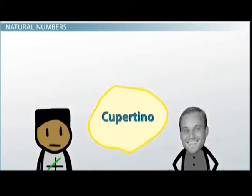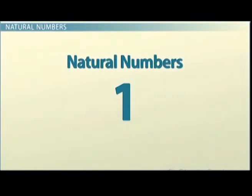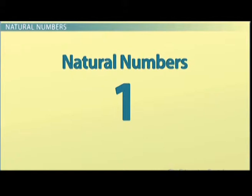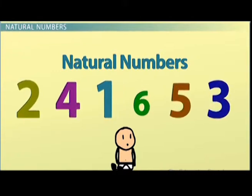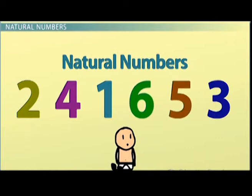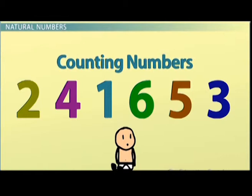On the number side of things, the most basic number is the number one, and the most specific descriptor of where it lives is called the natural numbers. And the natural numbers are all the numbers that you learn when you're a baby, like one, two, three, four, five, six, and on and on and on. The natural numbers are also sometimes called the counting numbers, because they're the first numbers you learn how to count.